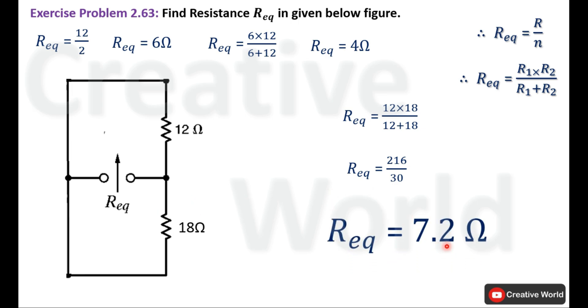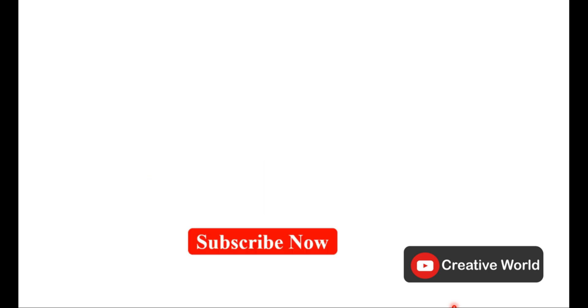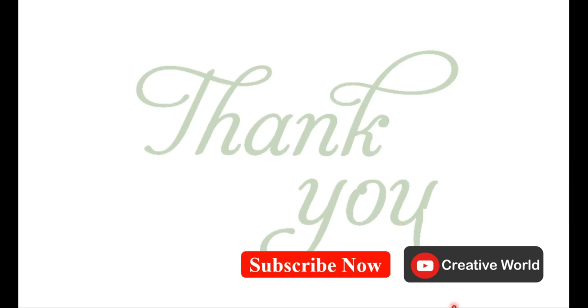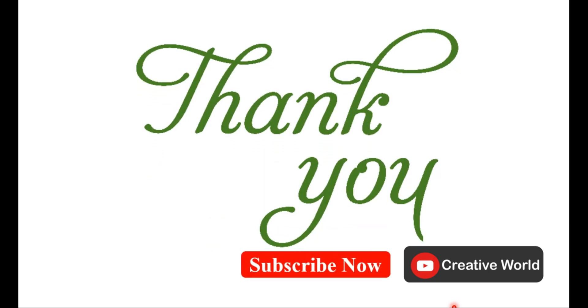So the R equivalent of this complete network is 7.2 Ohm. This was exercise problem number 2.63. Thank you, see you again in the next video.